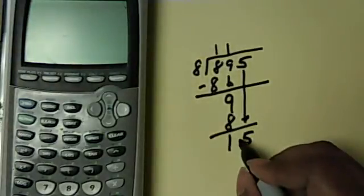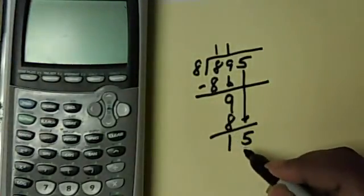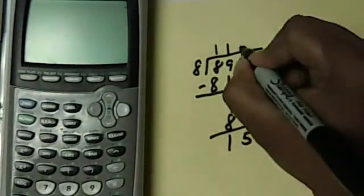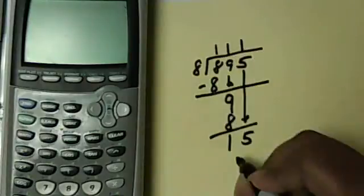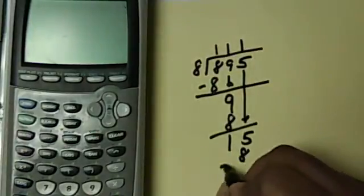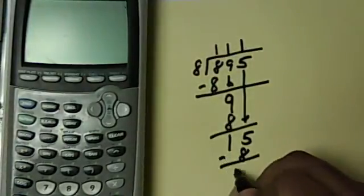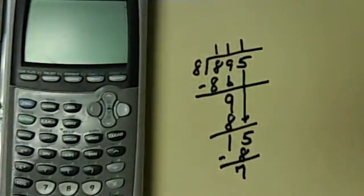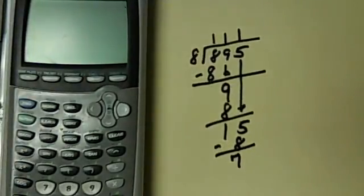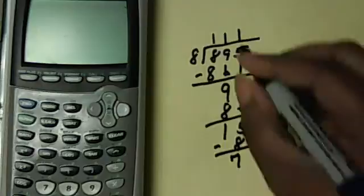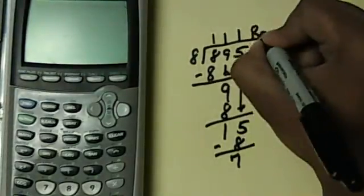15 — well, 2 times 8 is 16, so that's too large. So again, 1 times 8 gives me 8. When I subtract these two, I get 7. So my answer is 111, remainder 7.